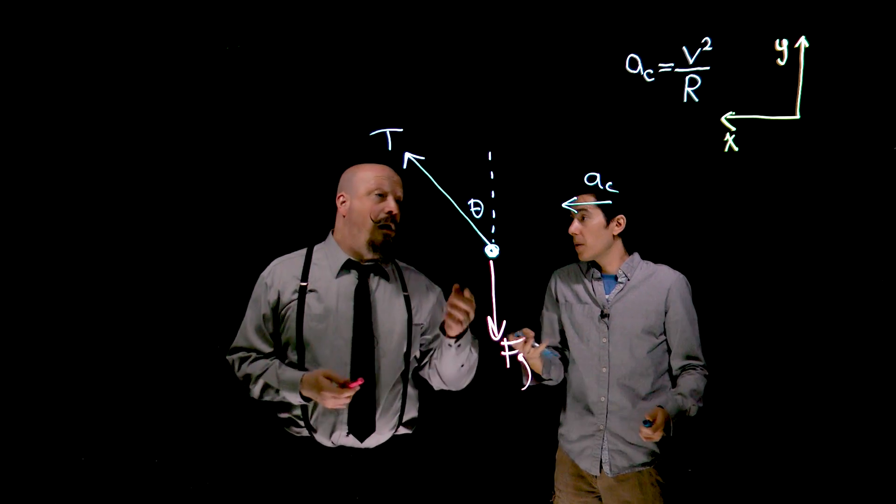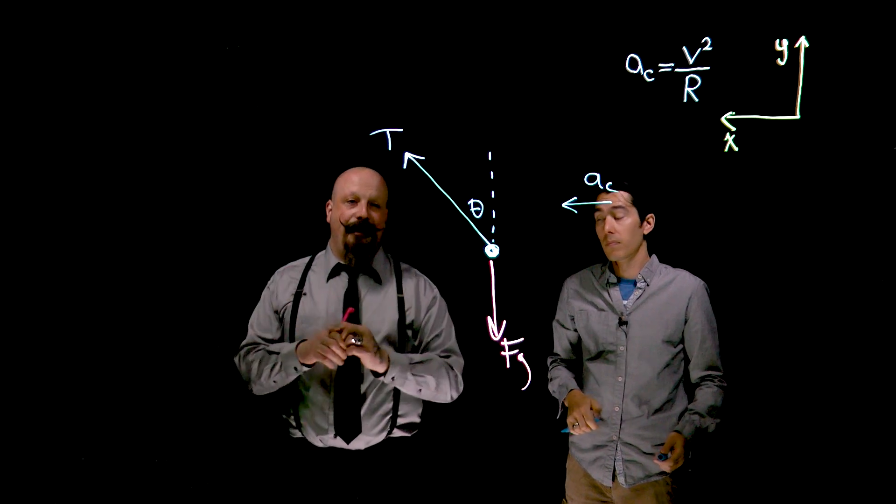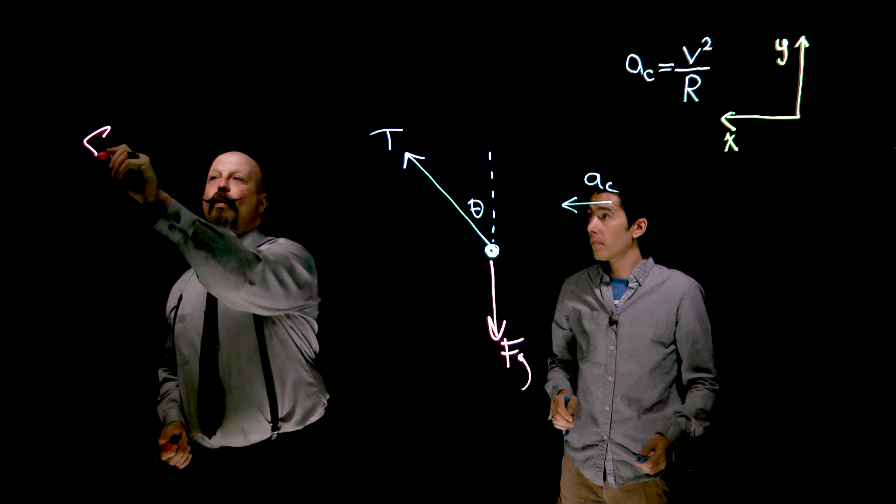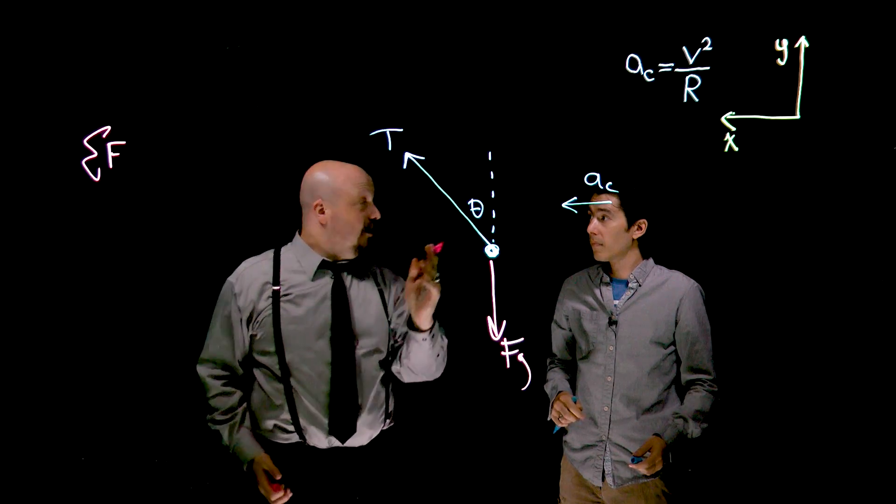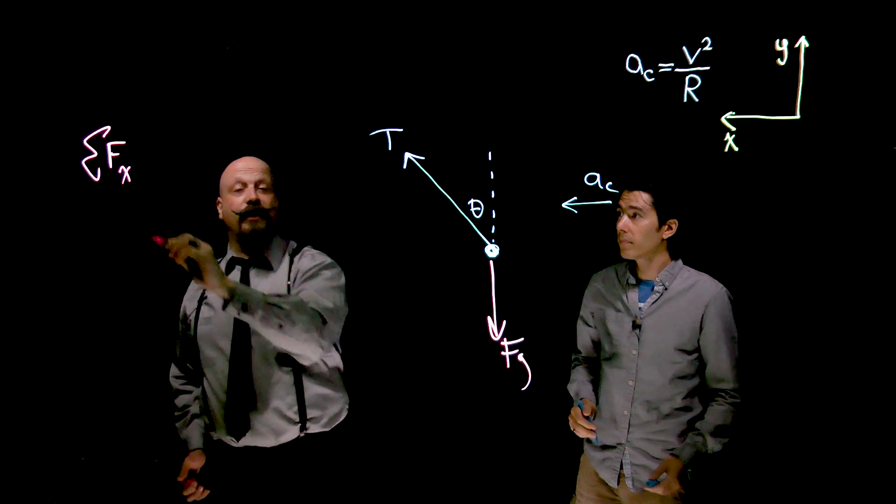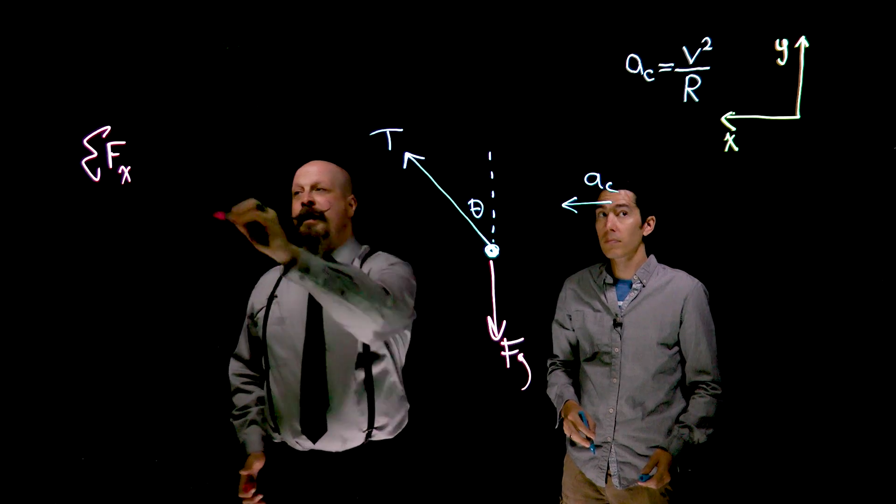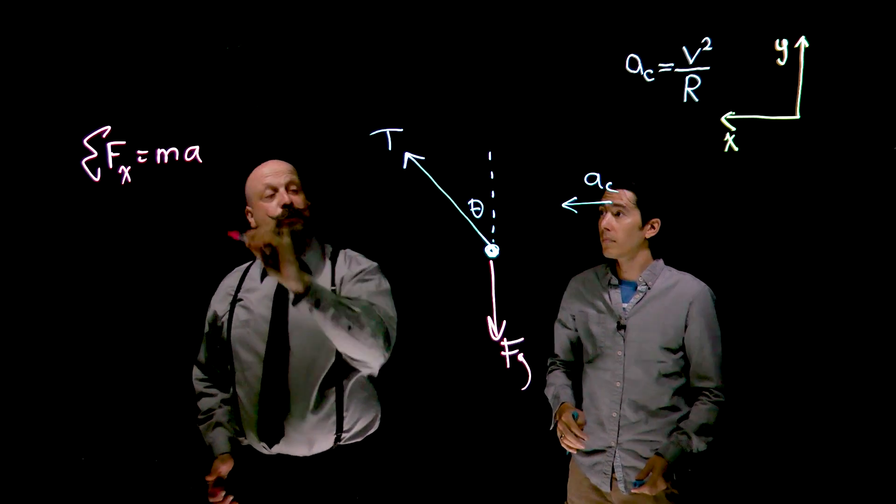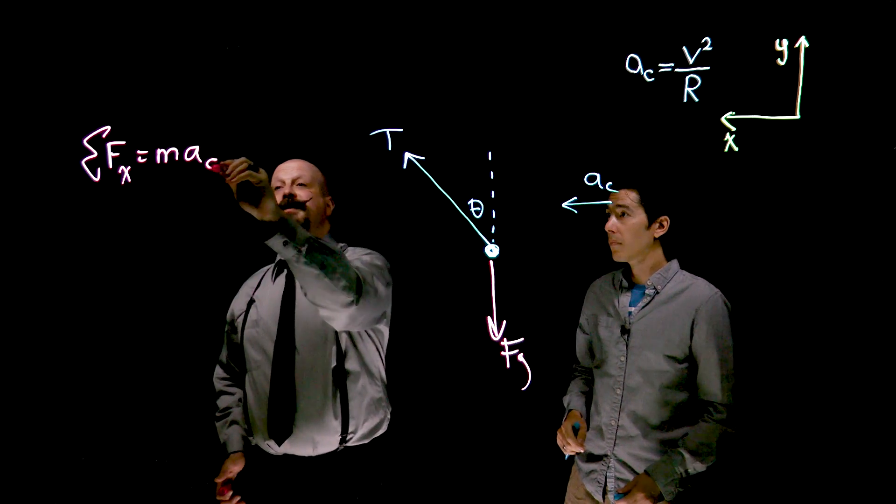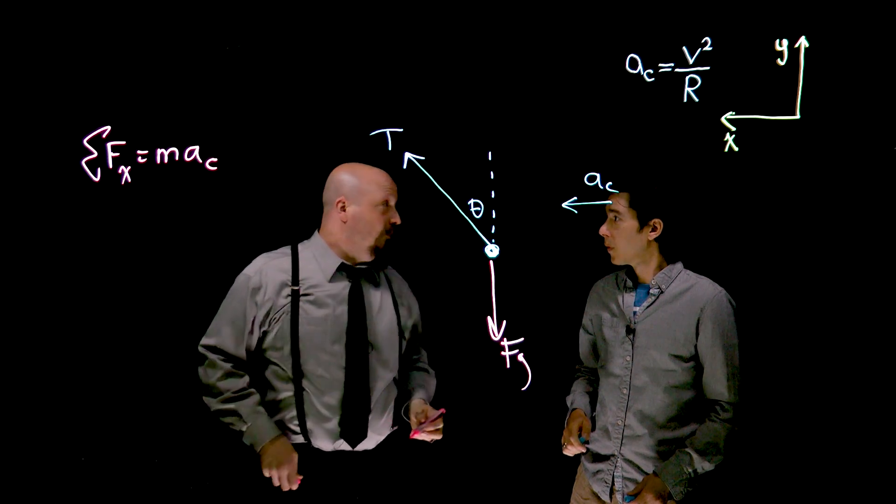But now we're done. And that's the thing, right? We're doing a free body diagram. All we want to discuss is the sum of forces. And in this case, if we just look at the sum of forces in the x direction, it's not equal to zero, it's equal to mass times an acceleration term, where that acceleration term is that center-seeking acceleration, or that inwards pull.